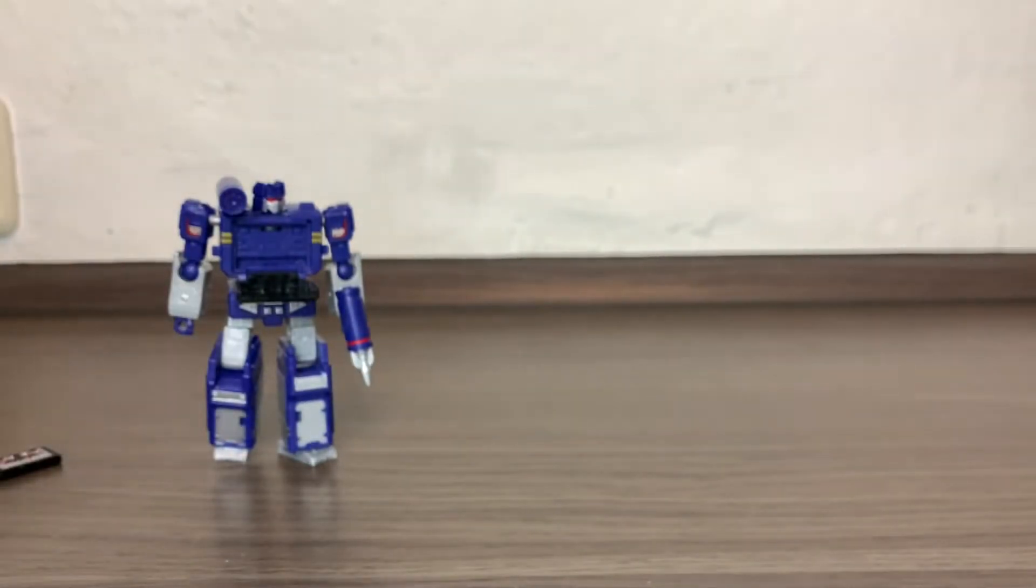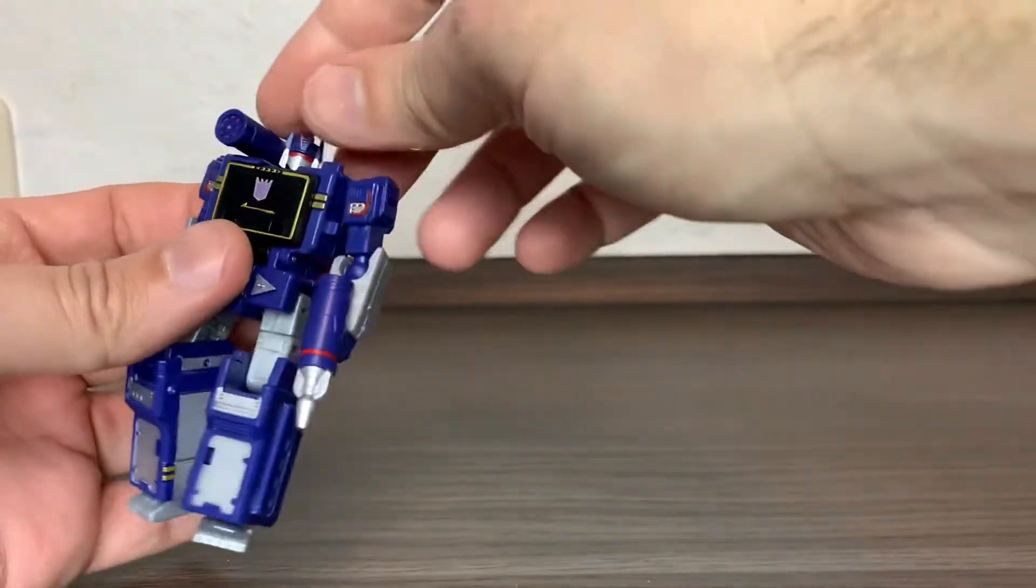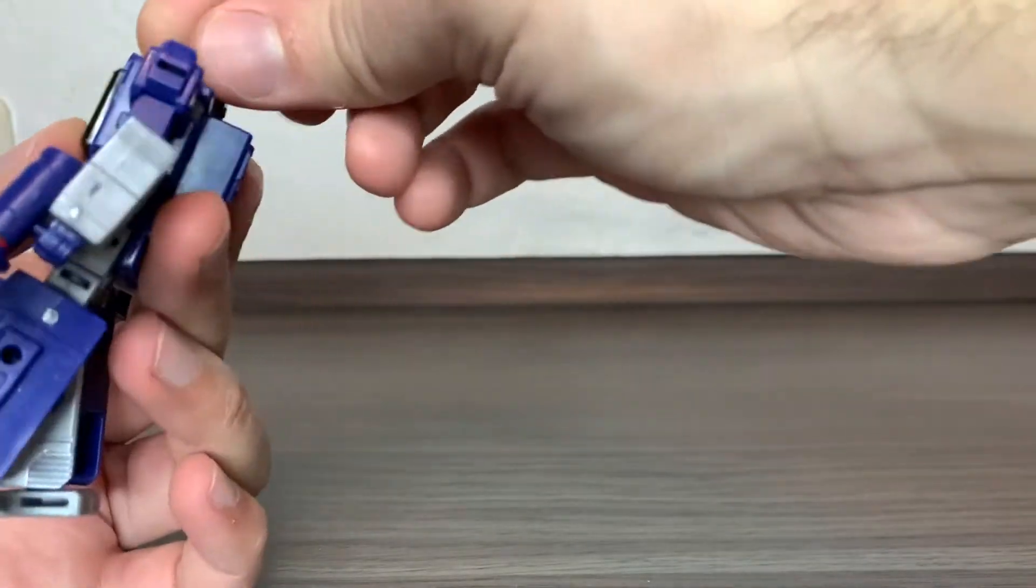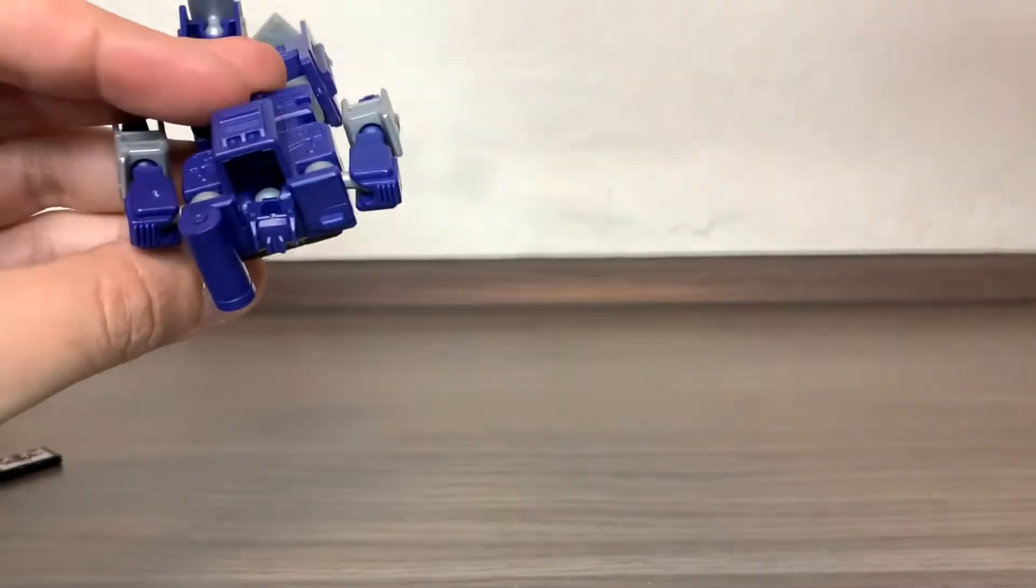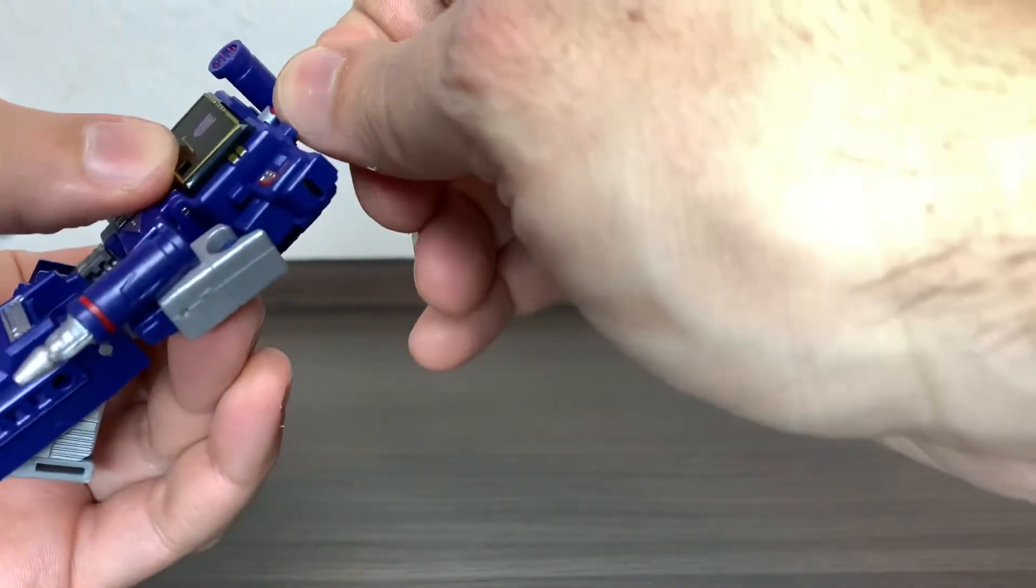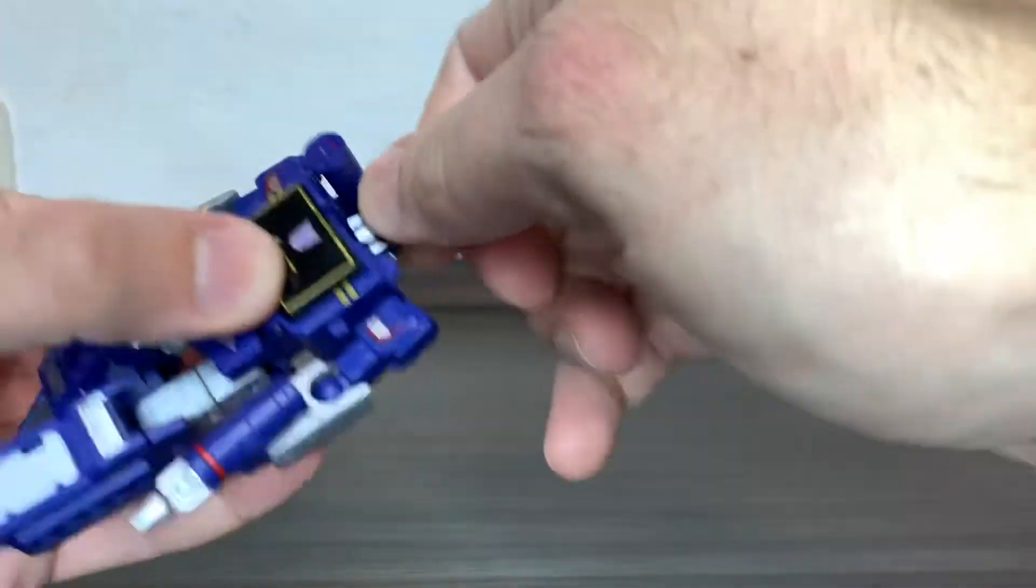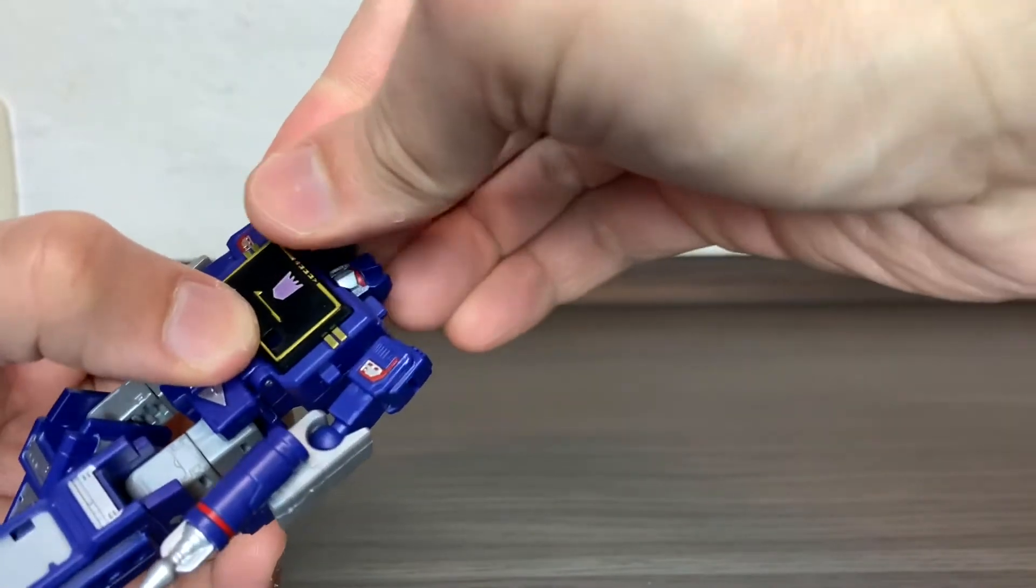For articulation, he can move the head all around. He's on a ball peg there, so he can also lean backwards for transformation. He can turn the head all the way around. You have the shoulder cannon which is just pegged.